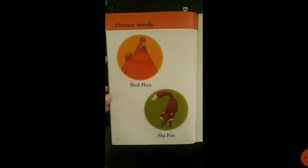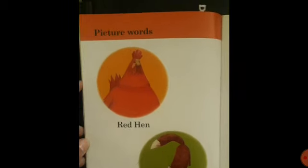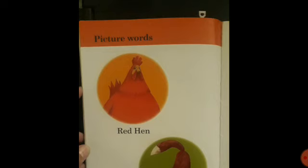After watching the video, you will be able to tell who are these. Yes, they are the characters in the story. There are two animals in the story. The first one is red hen and the second one, sly fox. So, repeat the words with me. Red hen. Red hen. Red hen.